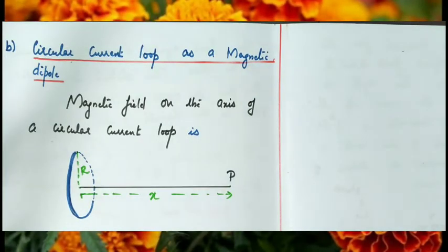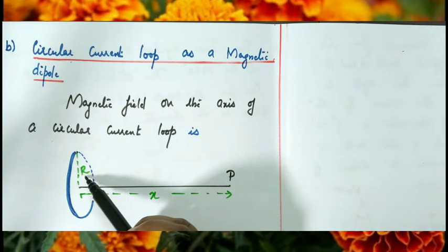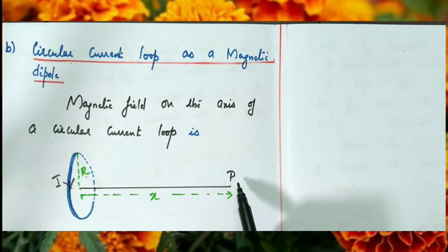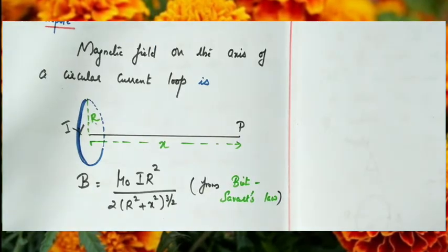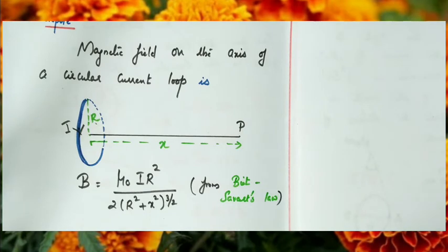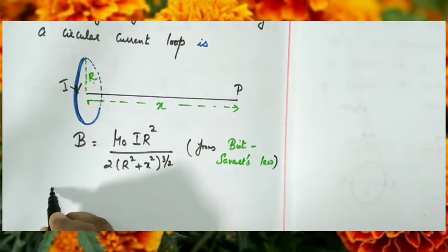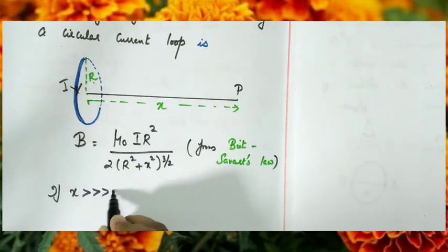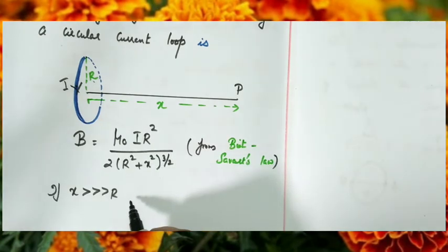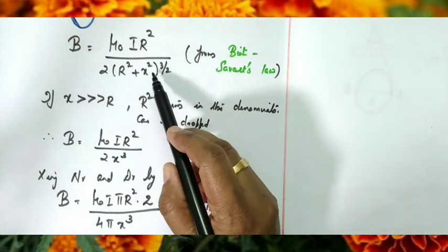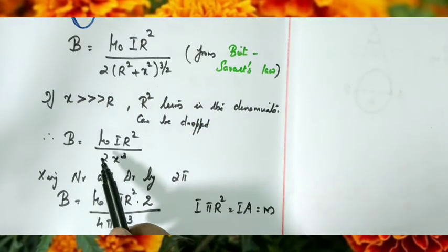Now we study the circular current loop as a magnetic dipole. The magnetic field on the axis of a circular current loop of radius R carrying current I at an axial point is given by B = μ₀IR²/[2(R² + X²)^(3/2)], from Biot-Savart's law. If X is much greater than R, we can drop R² in the denominator, giving B = μ₀IR²/2X³.